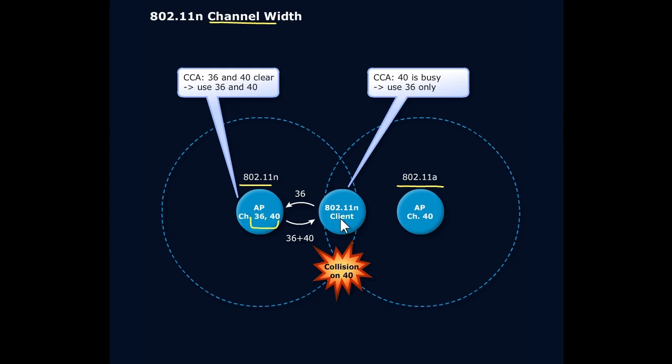A client using 802.11 N would recognize that 40 is busy and would reduce itself to only communicating on channel 36 because it hears the noise of access point 40. It would recognize, 'I can't use that top end of the signal.' However, the other access point cannot recognize that. It's going to transmit on 36 and 40, and so we can have collisions occurring.